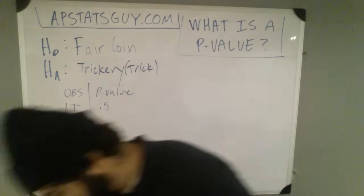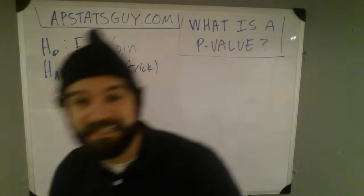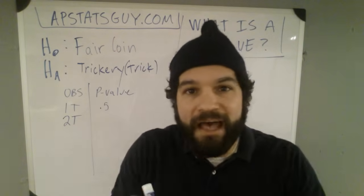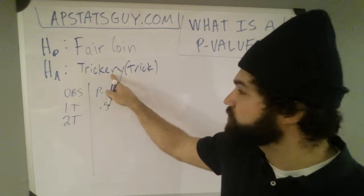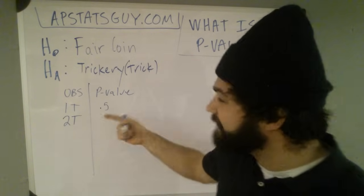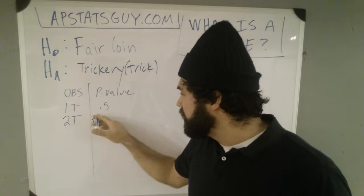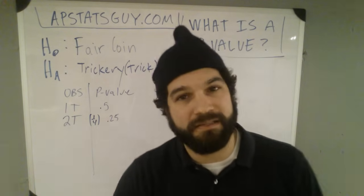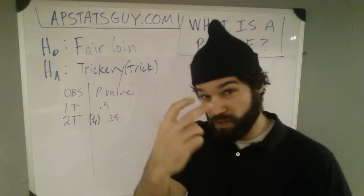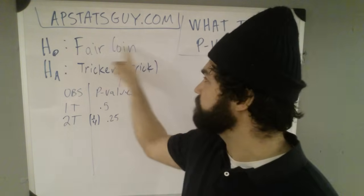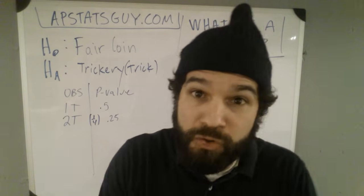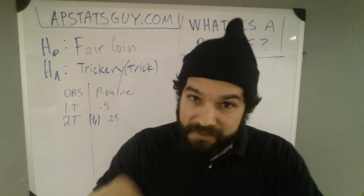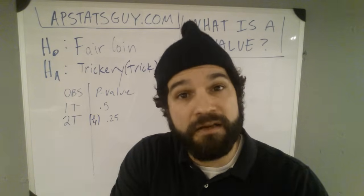I flip it again — tails again! Tails twice. Now do you believe it's a trick coin? No, because this happens about one out of every four times you flip a coin twice — about a 0.25 p-value. The p-value is the likelihood of what you saw happening if the null were true, if it were a fair coin. It's assuming the null is true.